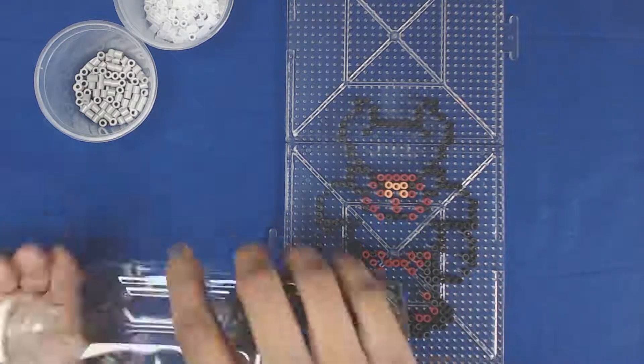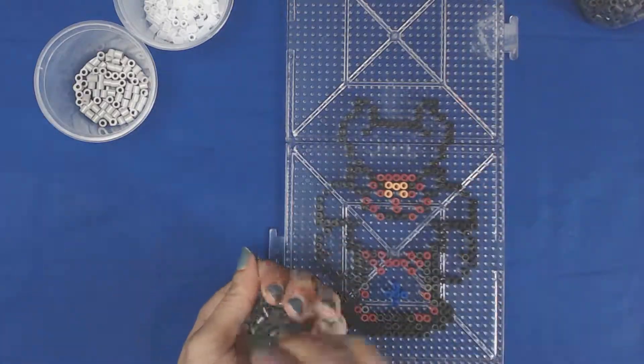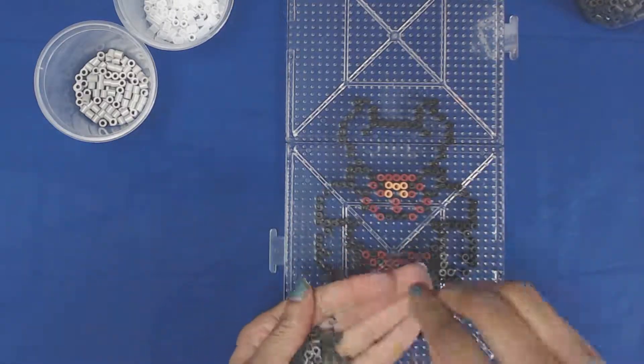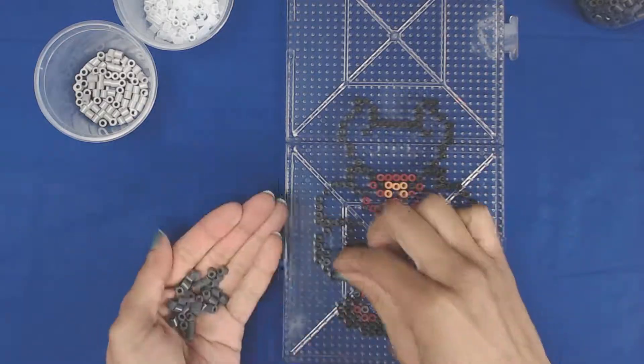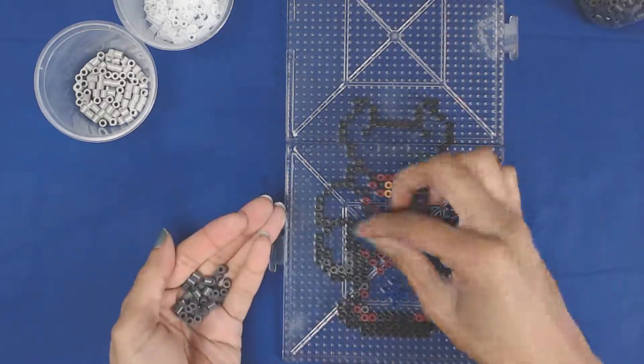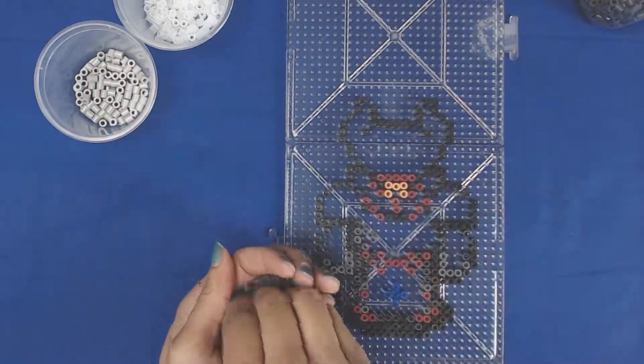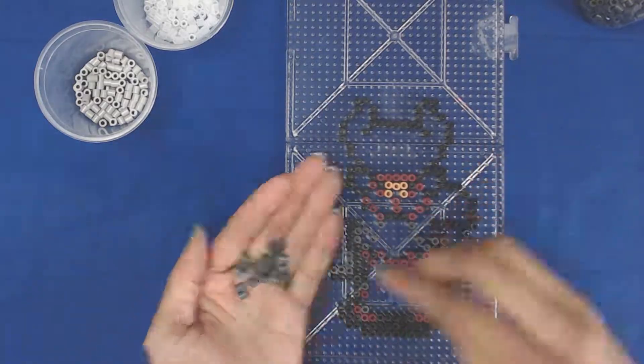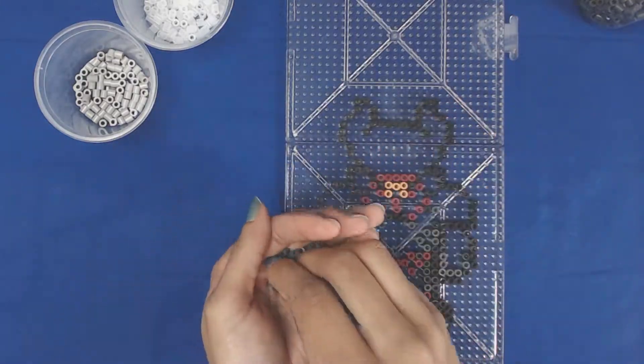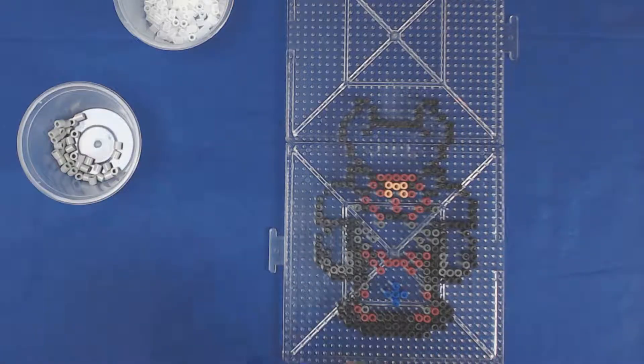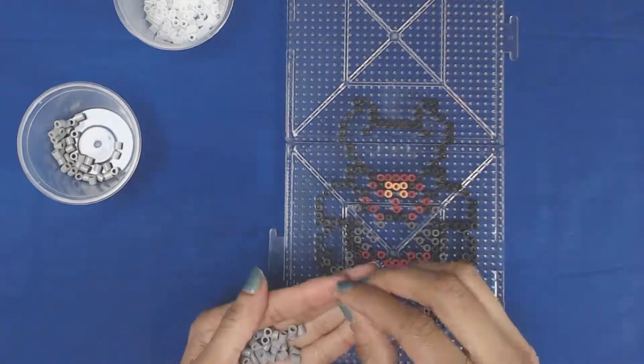One of my habits when I do Perler sprites is to do the outline first, because then I find that it's just a lot easier to fill in the space after that. It helps me keep track of where I am, in case I need to stop in between or something.